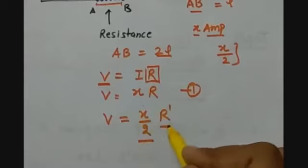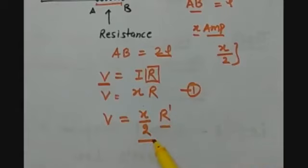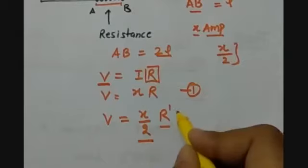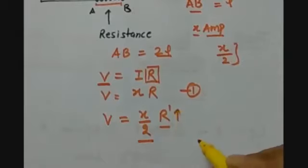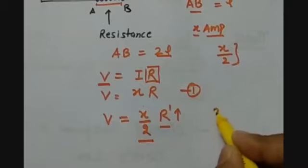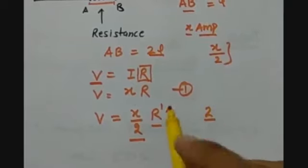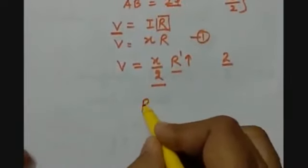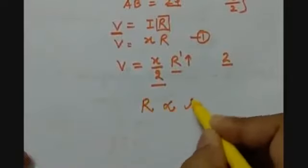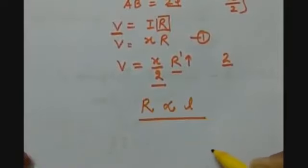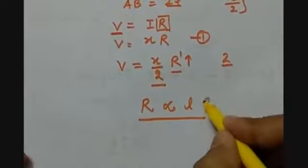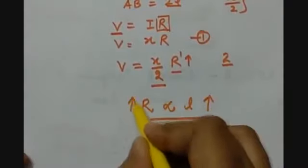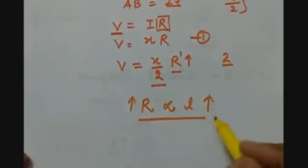Because we have increased the length of the conductor, the current has decreased, but the resistance has increased by a factor of 2. So when we double the length, the resistance also gets doubled. That means resistance is directly proportional to the length of the conductor. When the length of the conductor increases, resistance will also increase, and vice versa.